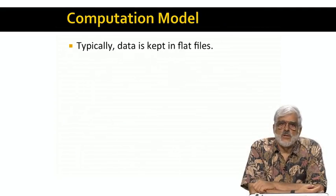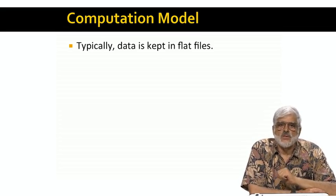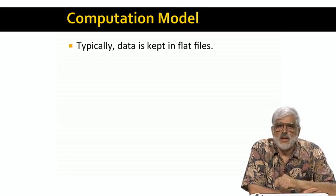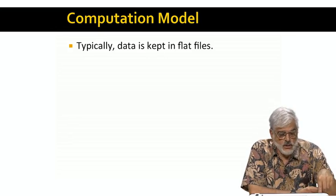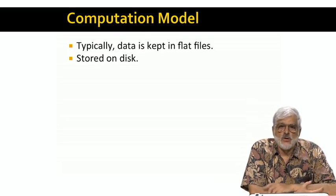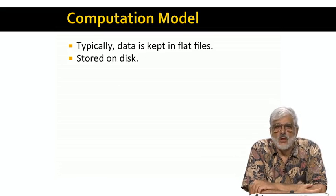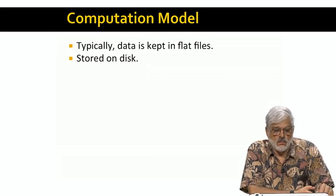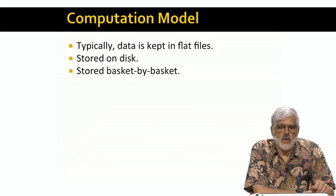We're going to look at finding frequent item sets in a setting where the basket data is kept in a flat file, not any sort of a database system. As I tried to argue on the previous slides, it is finding frequent item sets that is the hard part of finding association rules. So even if our goal is to get association rules, and in many cases we really want only the frequent item sets anyway, not the association rules, we're going to talk from this point only about the problem of identifying the frequent item sets. We assume the data is so big that it has to be stored on disk. Since reading data from disk often takes more time than what you do with the data once it is in main memory, our primary goal will be to minimize the number of times each disk block has to be read into main memory.